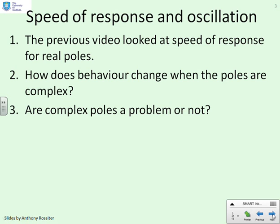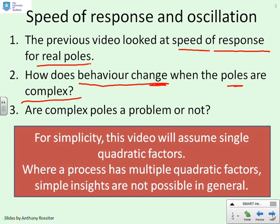So the previous video looked solely at the speed of response for real poles, and now we want to ask ourselves how does the behaviour change when the poles are complex, and indeed are complex poles a problem or not? For simplicity, this video is going to assume single quadratic factors. It is possible that a process will have multiple quadratic factors, and in that case simple insights are not possible, but I would also argue that such cases are relatively rare and therefore way beyond the remit of what you would want to cover in these videos.